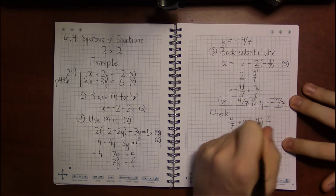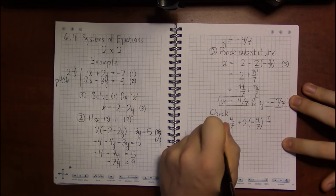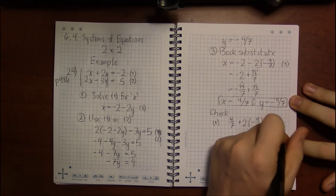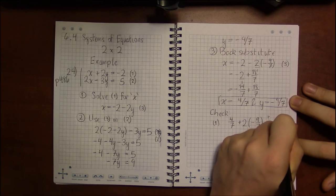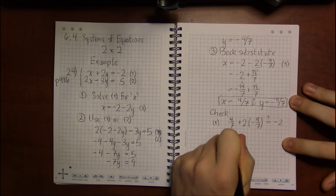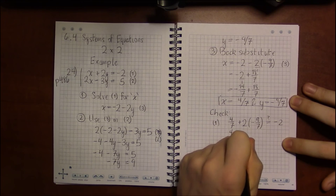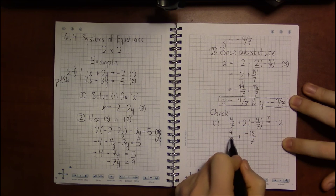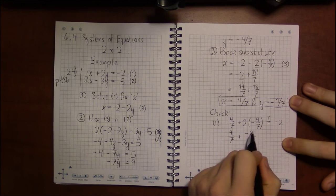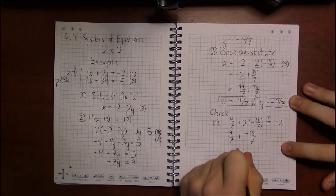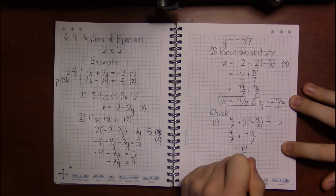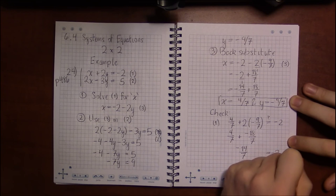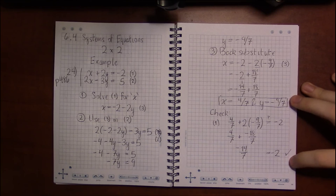So in equation 1, we're curious if 4 sevenths plus 2 times minus 9 sevenths is really minus 2. Well, doing the arithmetic here, we have 4 sevenths plus minus 18 sevenths. That gives us minus 14 sevenths, and this is indeed another name for minus 2.